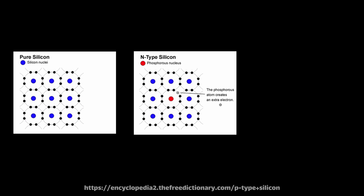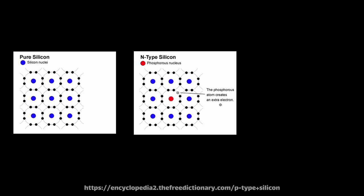There are dopants like phosphorus which are known as n-type dopants, and these impurities have an extra electron compared to silicon. When you have the silicon crystal with a bunch of phosphorus scattered around, there will be an excess of electrons in that area.